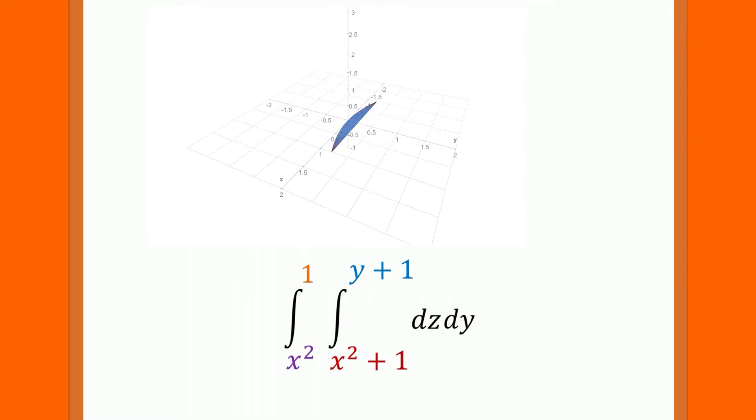Now let's collapse in the y direction, leaving us with just a thin region on the x-axis. Since there is only one variable left, we can now only move in the x direction. Now we'll be entering at the point x equals negative 1 and exiting at the point x equals 1. This gives us our final bounds.